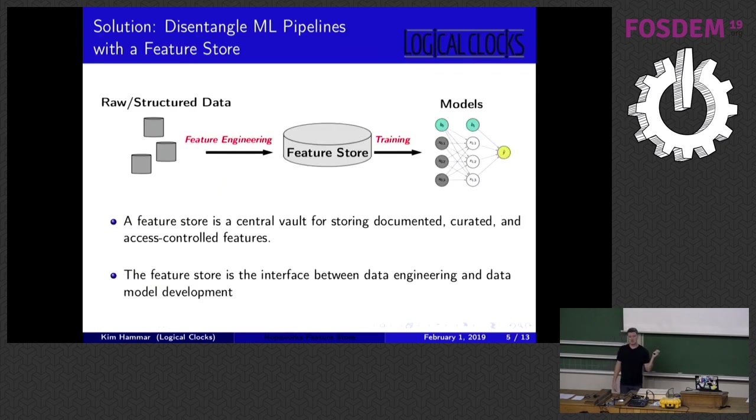Looking at the definition of a feature store is actually surprisingly simple. It is just a storage location within your organization where you store documented and curated features. But the power of the feature store really comes from the strong semantics that we can enforce on top of this feature store and abstractions that we can build on top of it.